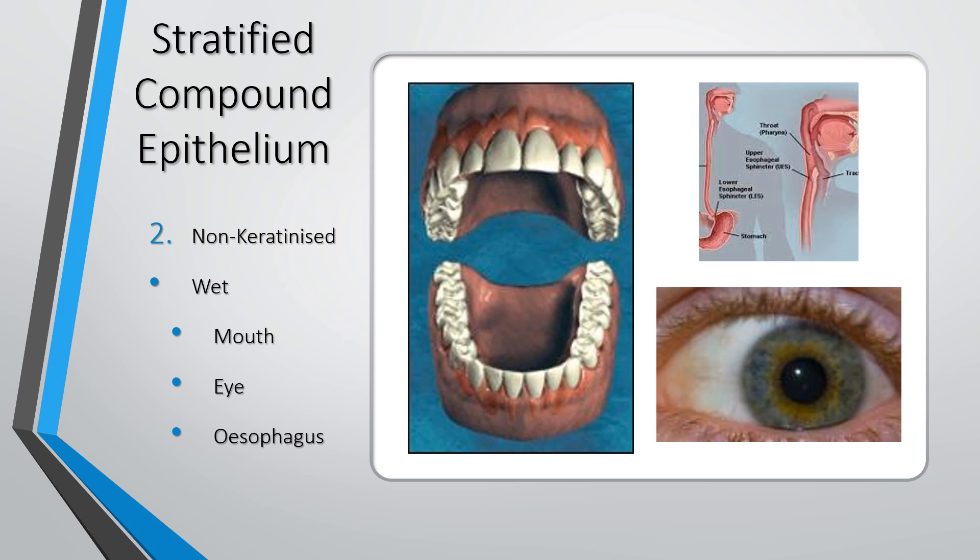The second type of stratified compound epithelium is non-keratinised — there's no keratin in this type. But it is wet. It can be found in wet places like the mouth, the eye, and the oesophagus. This is a protecting compound epithelium that is non-keratinised and wet, compared to the first type which was keratinised, dry, and found in nails, hair and skin.